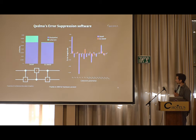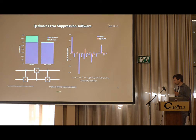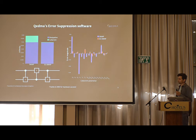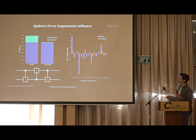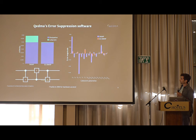Starting with error suppression. This is a good point to thank IBM for hardware access, without which these experiments would not be possible. This is an error suppression experiment for a swap gate compiled using three CNOT gates.